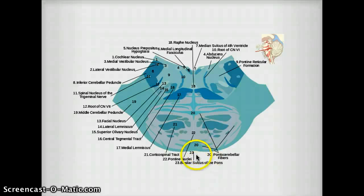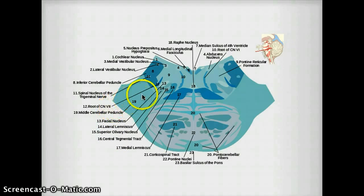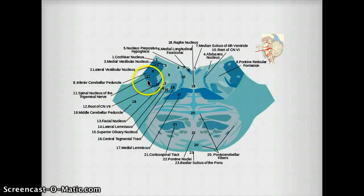This sulcus right here is the basilar sulcus of the pons. And you can see that this is the root of cranial nerve 8 right here. Moving laterally, you have the other cranial nerves.